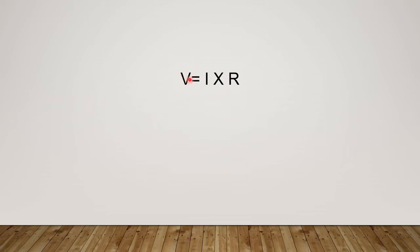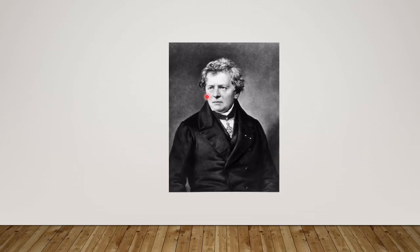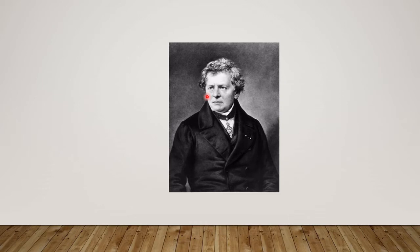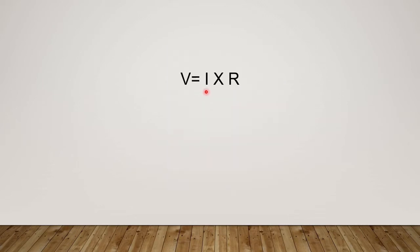So voltage equals I, which stands for current, times R, and R stands for resistance. Now I'd like to pause for a little moment and explain for a second. Current is spelled with a C, not an I, but the reason why I stands for current is because Georg Ohms was German, and when he was publishing his papers, he described current as intensity. So I for intensity.